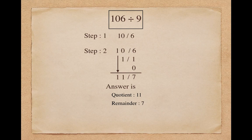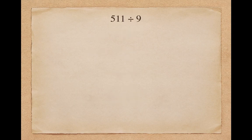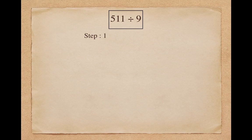Let's take another example. Suppose I want to divide 511 by 9. As a first step I will have to divide 511 into two parts, quotient and remainder. As the divisor 9 has only one digit, 1 goes in the remainder part and the rest of the digits, 51, goes in the quotient part.